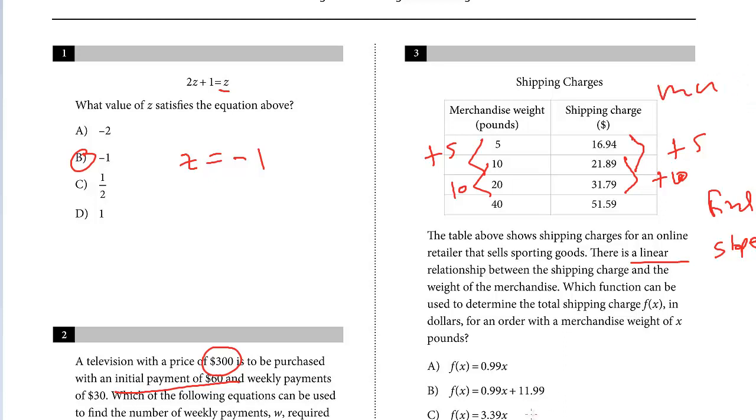To find the equation for merchandise weight x pounds, we know the slope must be A or B—these other slopes are much too big. You want to ask yourself, is there a y-intercept? Well, here you should recognize there is, because we know at 5 pounds, the shipping charge is $17, and we know the slope is 1.